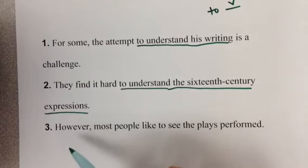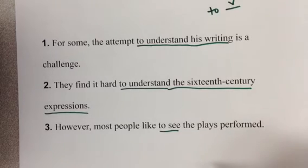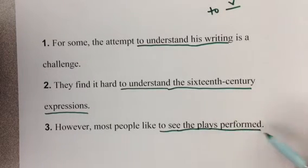Number three. However, most people like to see is our infinitive. And the thing that we see are the plays performed. So to see the plays performed is one infinitive. And by the way, this is the direct object. This is the thing that most people like.